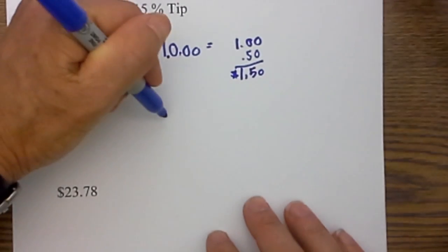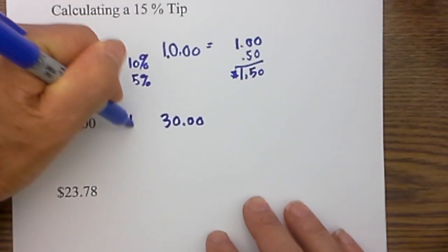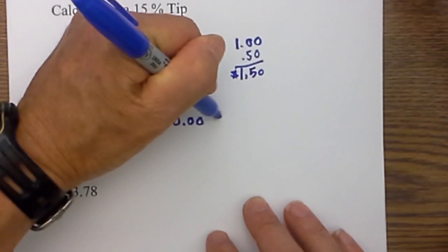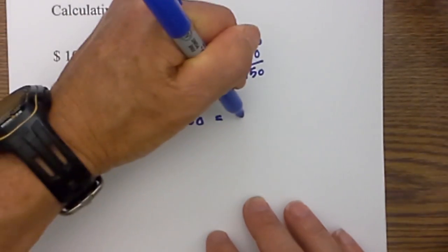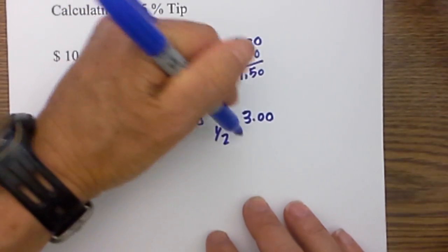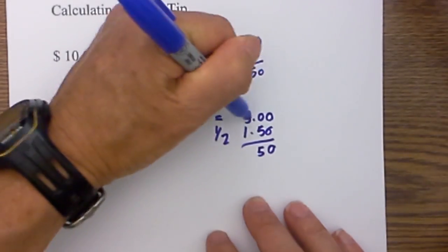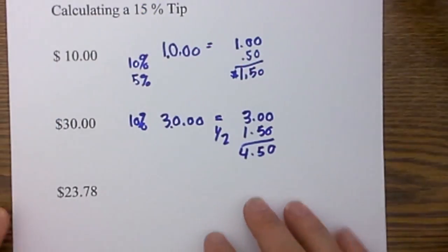Let's do another example. I have $30 so I will calculate the 10% tip by moving the decimal place to the left so I get $3, and then I take one half of that which is $1.50, and so that gives me a tip of $4.50.